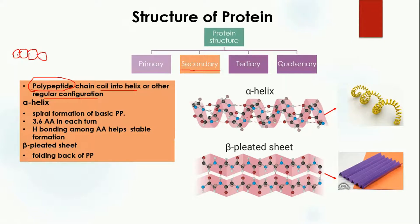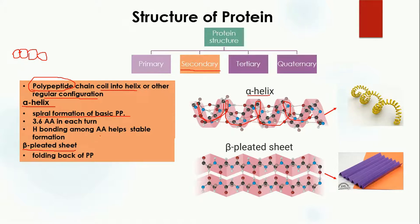When the primary structure coils into a helix or some other arrangement, it forms the secondary structure. The two important secondary structures are the alpha helix and the beta pleated sheet. The alpha helix is formed by the spiral formation of the amino acid chain — you can see it is spirally arranged, similar to a phone cord that is coiled. There are 3.6 amino acids per turn, and hydrogen bonding stabilizes this formation.